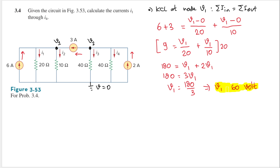Now let's do another KCL to find V2. KCL at node V2: the sum of currents going in equals the sum of currents going out.